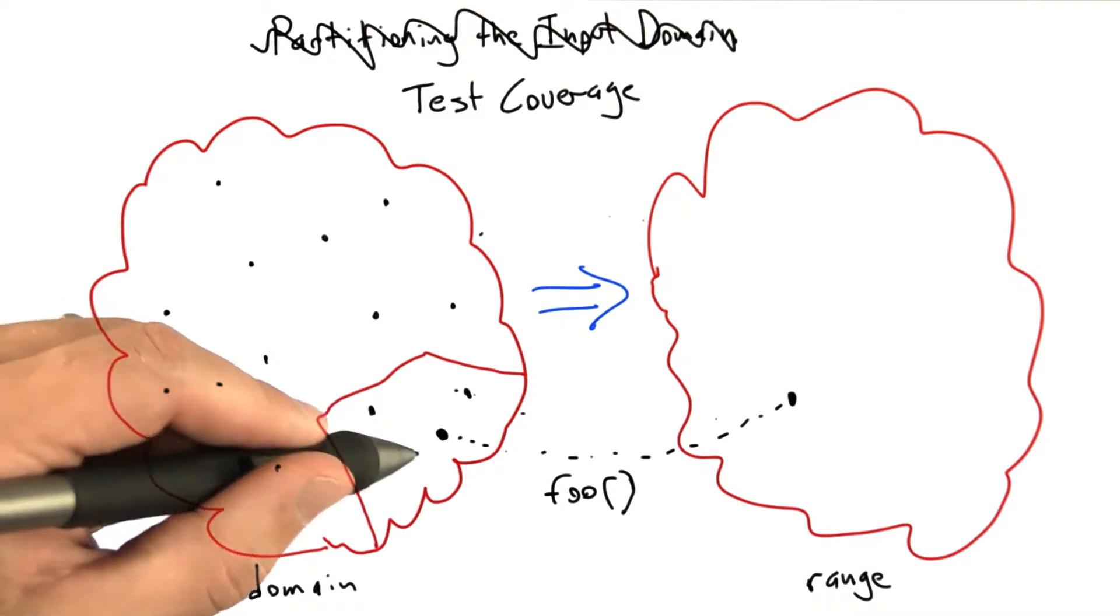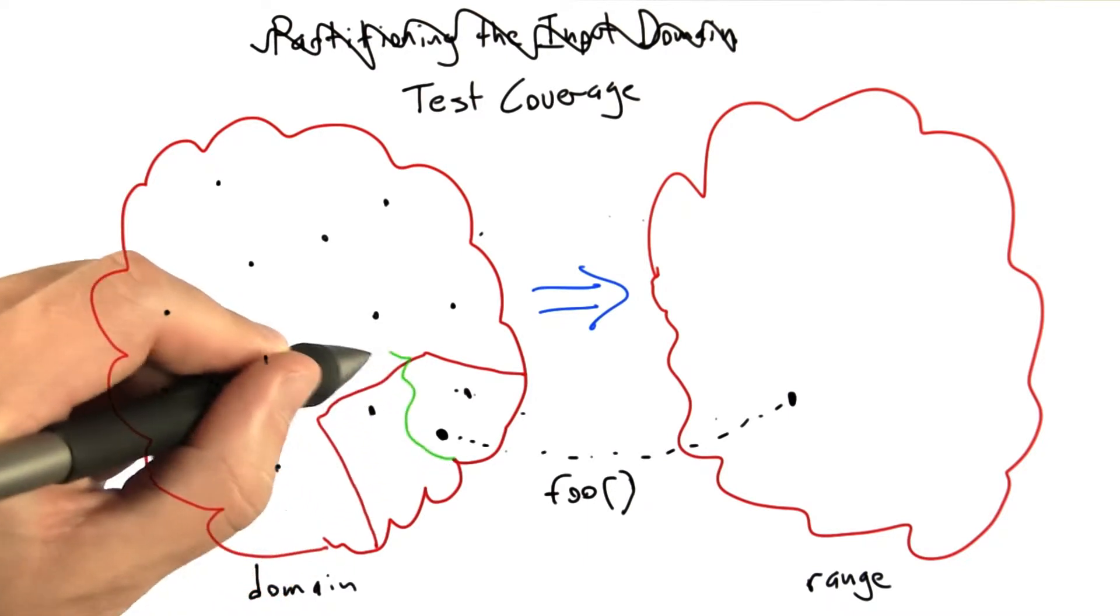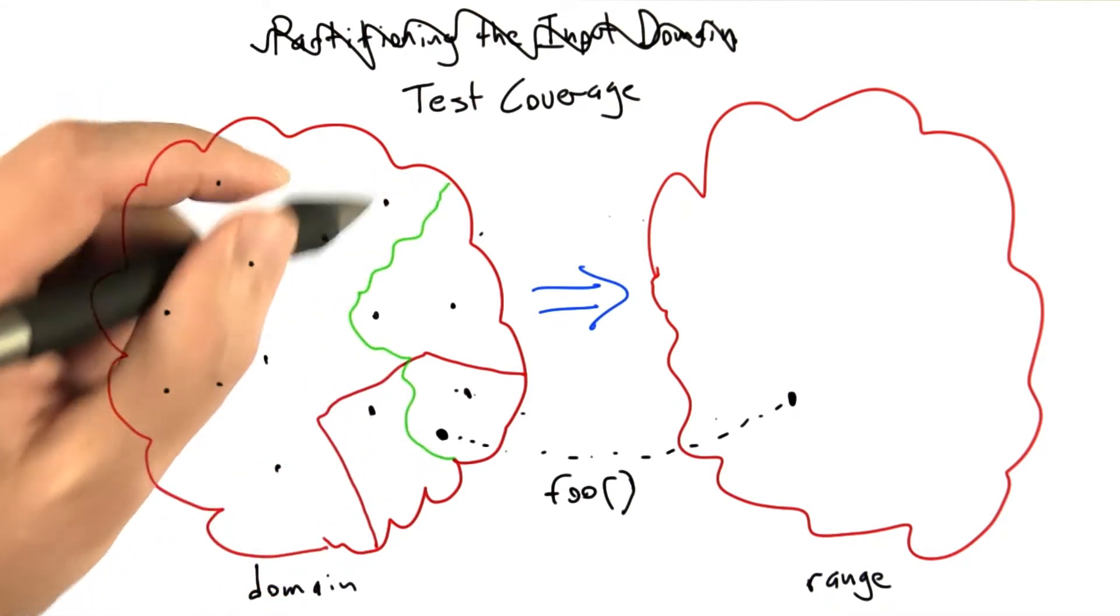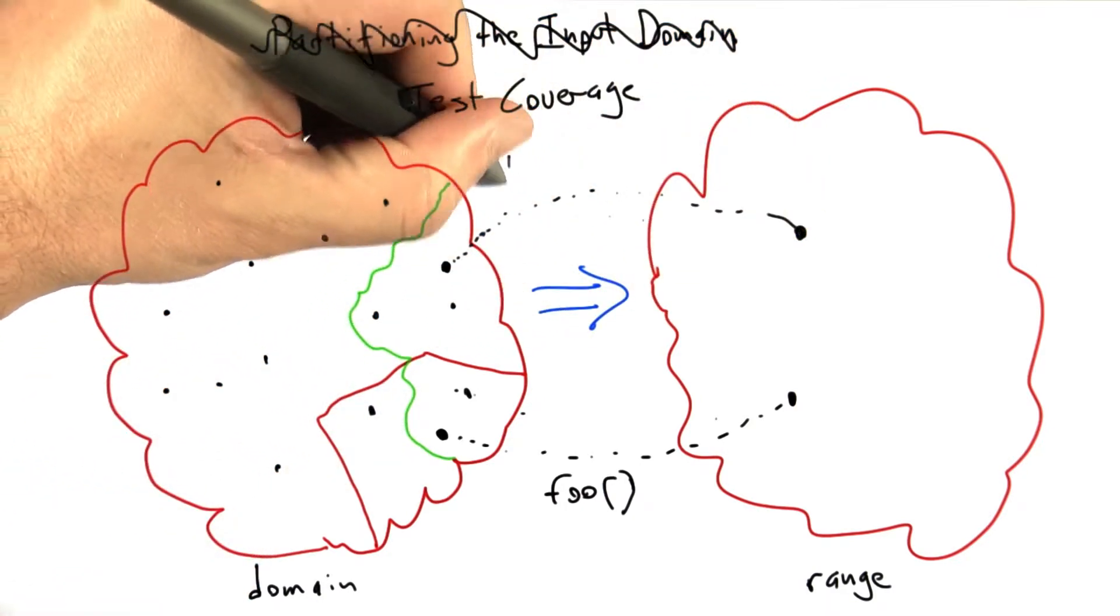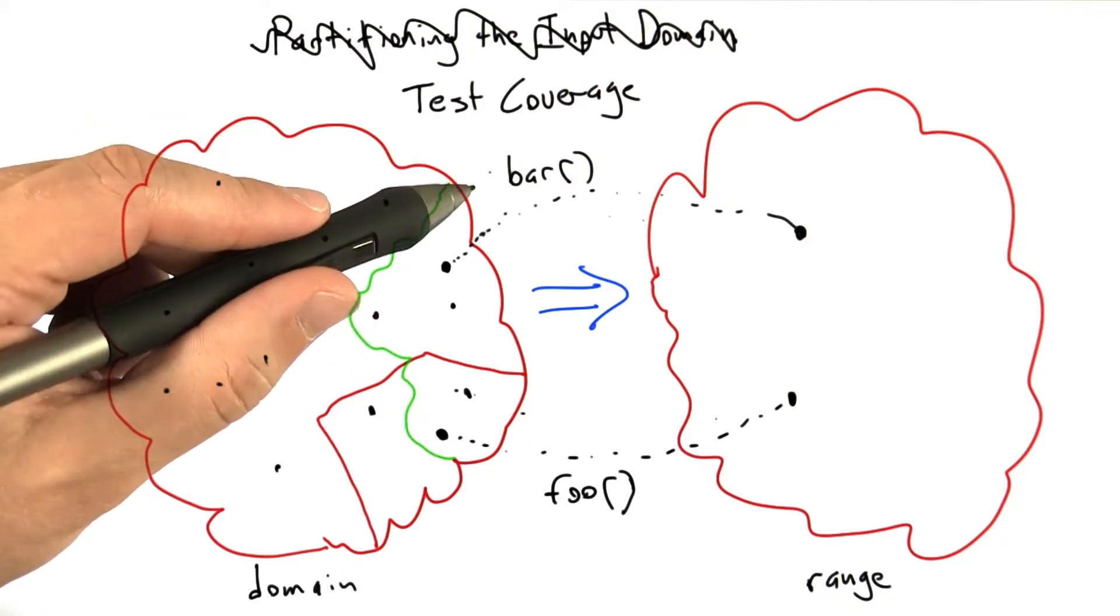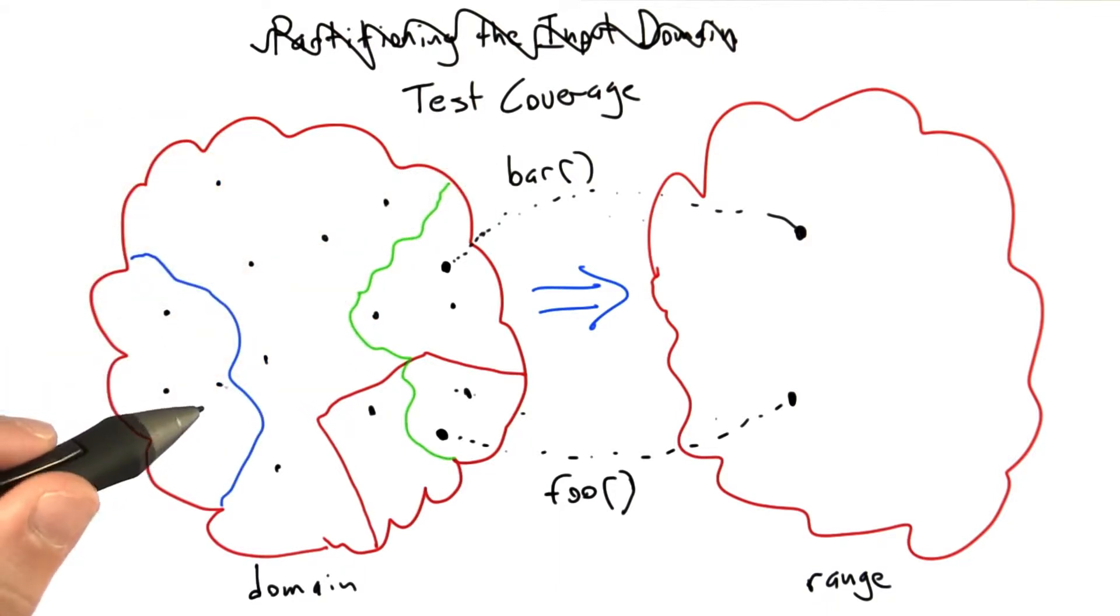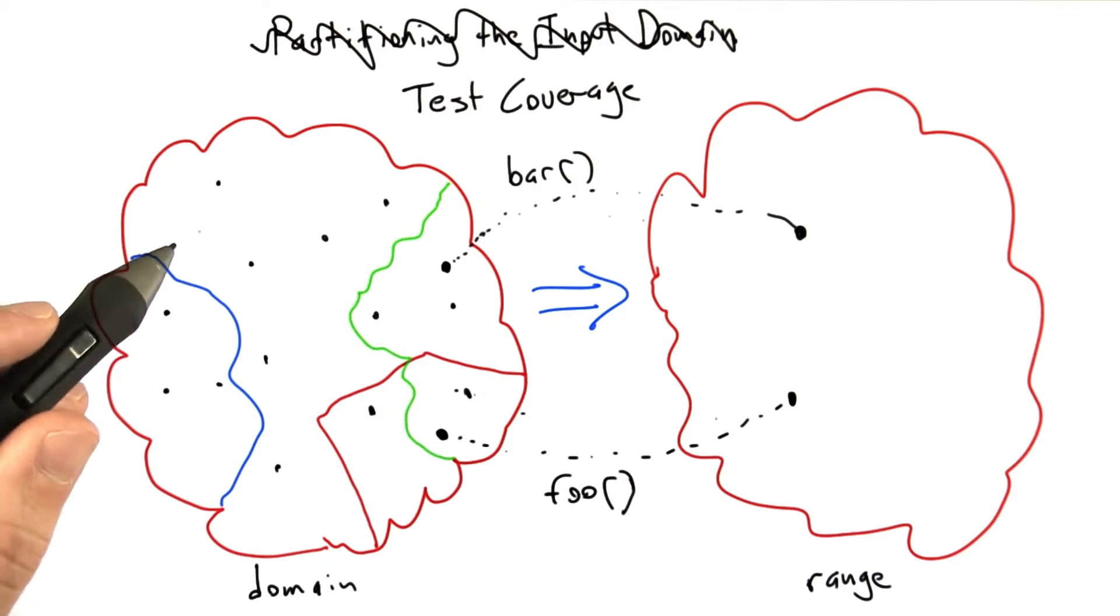So now there's going to be some different subset of our input domain, and any point in this subset of the input domain, when used as a test input, is going to result in a different function in the system under test. Let's say bar being called. We can keep subdividing the input domain for the software under test until we've split it into parts that result in every function being called.